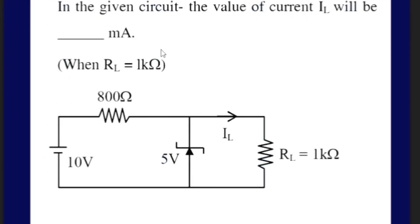If you want to see the sum, you will need to solve the sum. In the given circuit, the value of current IL will be how many mA? The IL will be solved at the resistor level. There are 10V and the resistor is 800Ω.